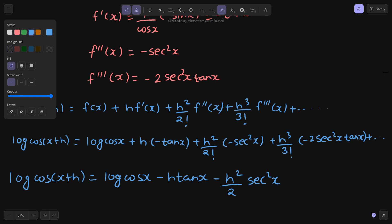In the next term we can write minus in front, 3 factorial is 6. So if I cancel with that 2 I will get minus h^3 by 3 secant square x tan x and so on. So this is the final expansion of log cos(x+h) in terms of h with the help of Taylor's theorem.